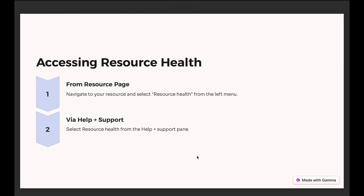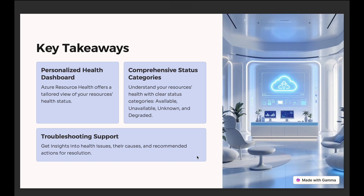To access the resource health page, you can directly go to a resource like a VM and navigate to the Resource Health section in the left blade, where you'll see a detailed description of the health page. You can also go via Help and Support, from where you can set up alerts on resource health events and get notified.